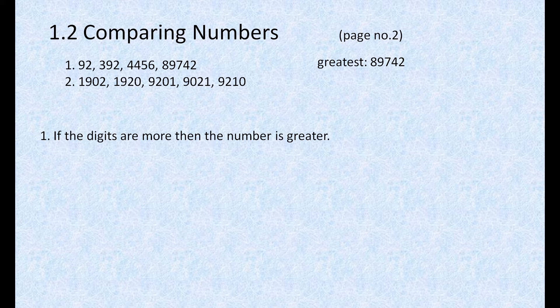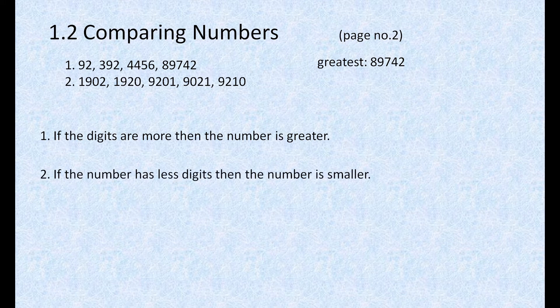Now, how are you going to find out the smallest number? The next rule is: if the digits are small — that is, if the number of digits are less — then the number is smaller. The first number has only two digits, so the smallest number is 92.